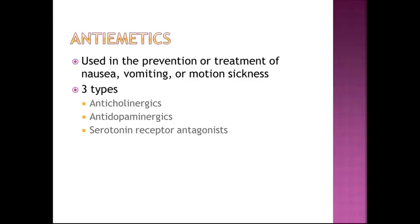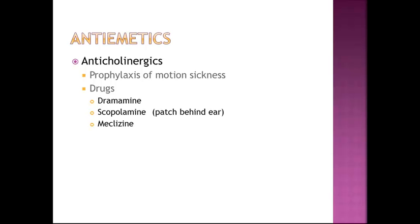Antiemetics are used in the prevention or treatment of nausea, vomiting, and motion sickness. There are three types: anticholinergics, antidopaminergics, and serotonin receptor antagonists. Anticholinergics are used for the prophylaxis of motion sickness. Drugs include Dramamine, scopolamine — which is the patch worn behind the ear — and meclizine. Dramamine is over-the-counter, while scopolamine is by prescription only. These medications are useful for patients who get car sickness or seasickness.